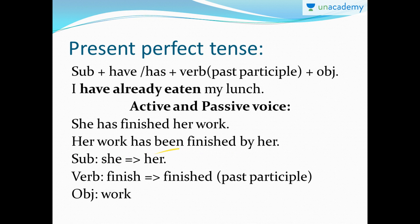The subject 'she' turns into 'her,' and the verb 'finished' stays as 'finished' — it is both the past tense and past participle form of the verb, and it does not change. There are a few words where the past tense and past participle form are the same; go back and watch my other tense videos to see a table of those. The object 'work' — you can never modify an object.